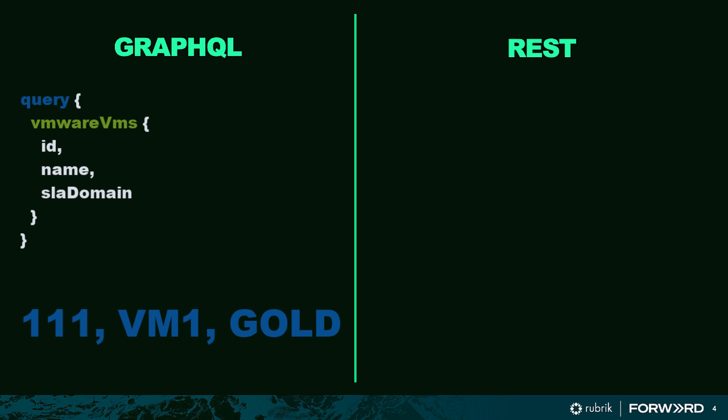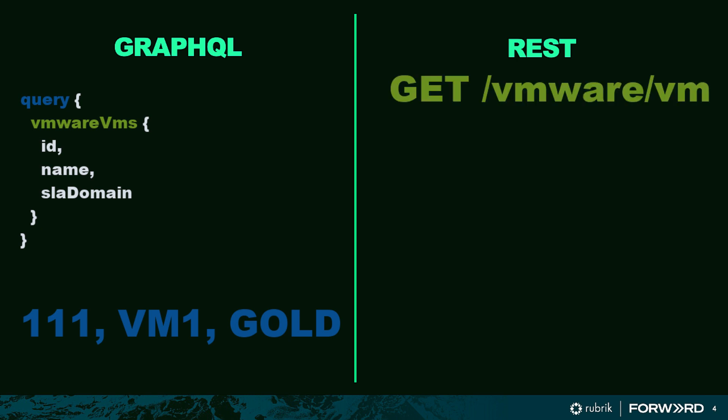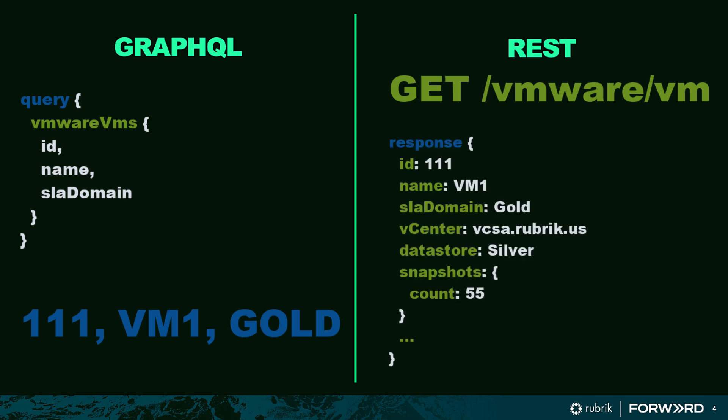Now, let's look at this same example with REST. REST works in terms of endpoints — there's a variety of URIs mapped to and serving up respective objects and data. In order to get that same information with REST, we would send a GET request to our VMware slash VM endpoint. As you can see, we do get the information we're looking for.